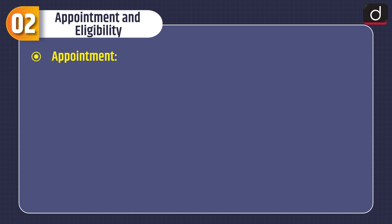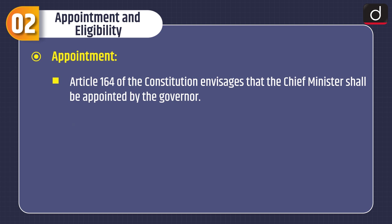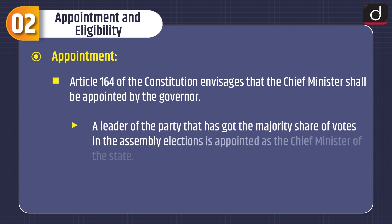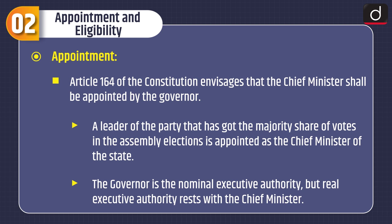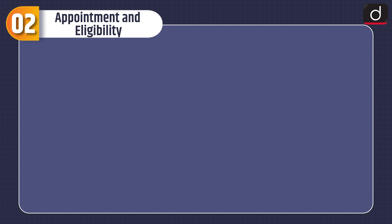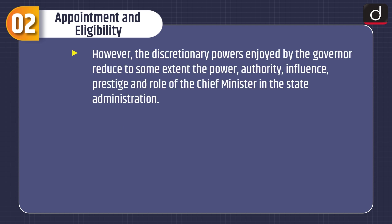Moving on to appointment and eligibility of the Chief Minister — first, appointment. Article 164 of the Constitution envisages that the Chief Minister shall be appointed by the Governor. A leader of the party that has got the majority share of votes in the assembly elections is appointed as Chief Minister. The Governor is the nominal executive authority, but real executive authority rests with the Chief Minister. However, the discretionary powers enjoyed by the Governor reduce to some extent the power, authority, influence, prestige, and role of the Chief Minister in the state administration.